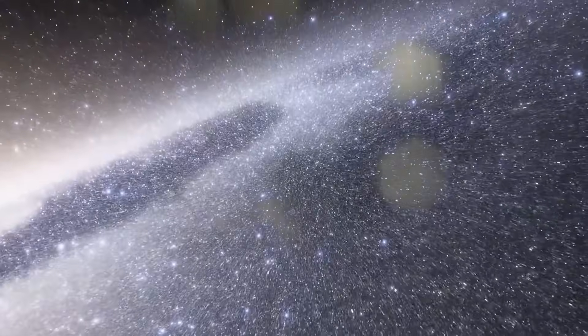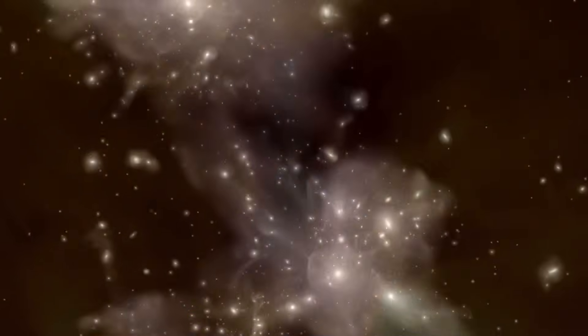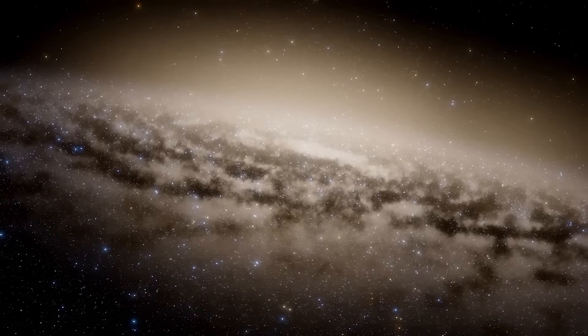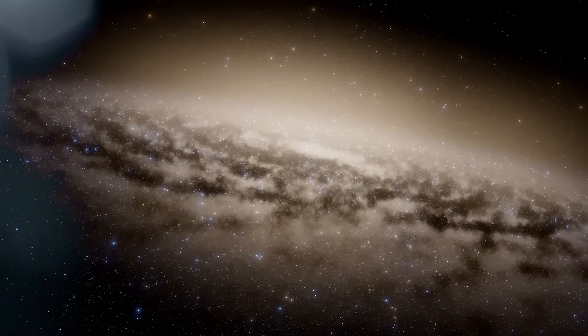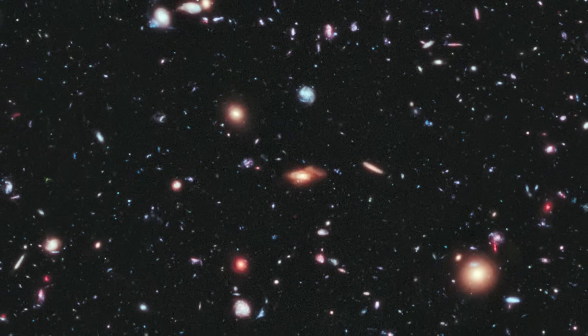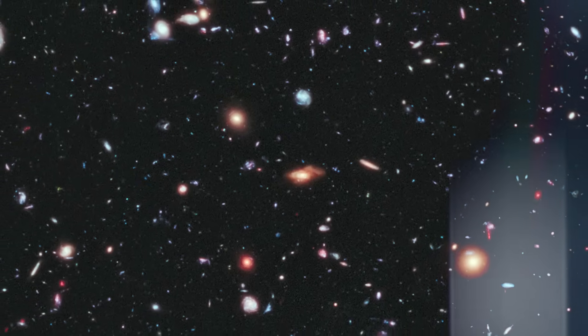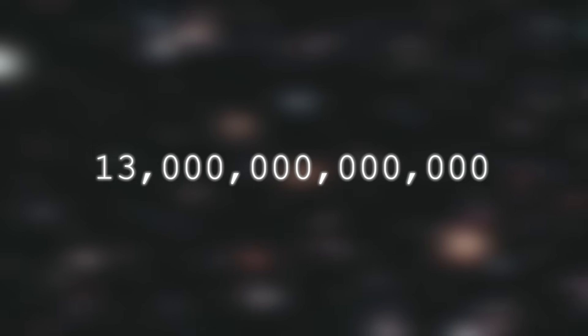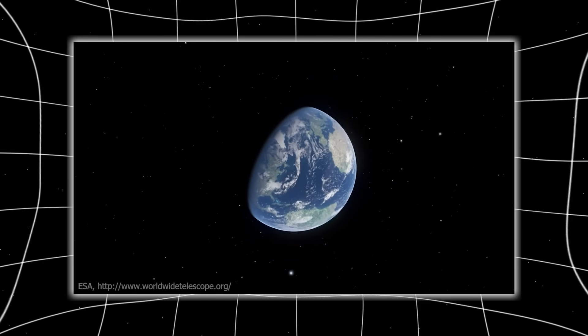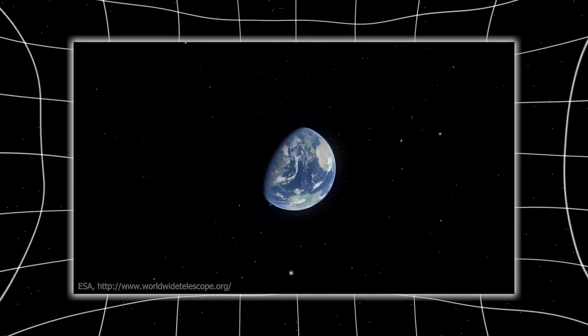They calculated the mass of these ancient galaxies, estimating how much gas, dust, and dark matter would have needed to collapse so quickly. Some of these early galaxies appeared to have the same mass as the Milky Way, but formed just a couple hundred million years after the Big Bang. For comparison, the Milky Way took over 13 billion years to become what it is now.